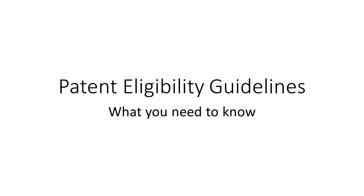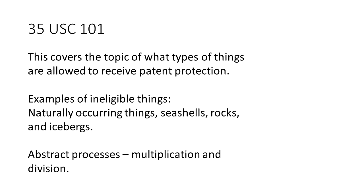Hello and welcome to another edition of Inventor's Quick Tips. Today we are discussing the topic of patent eligibility. The section of US law referred to as 35 USC 101 covers what types of things are patent eligible.